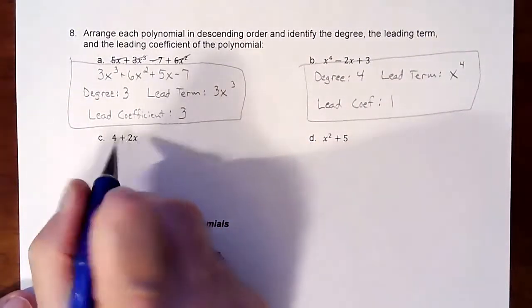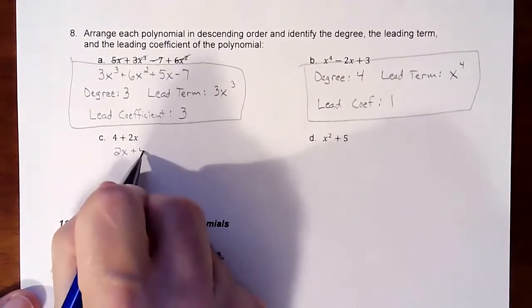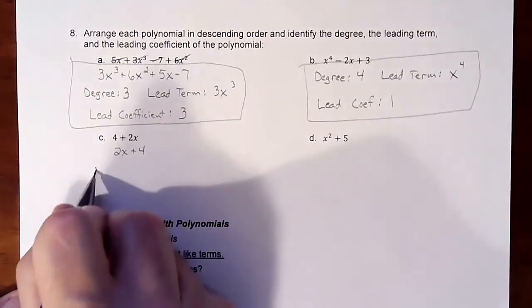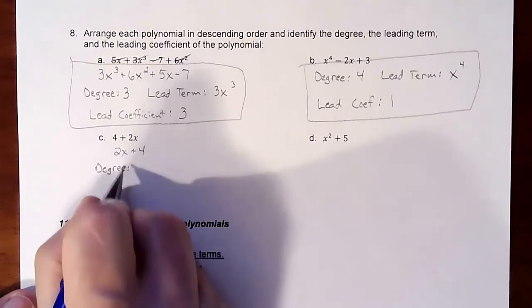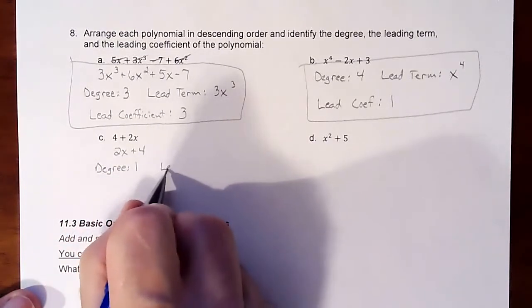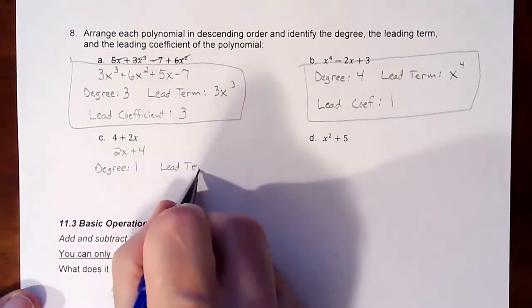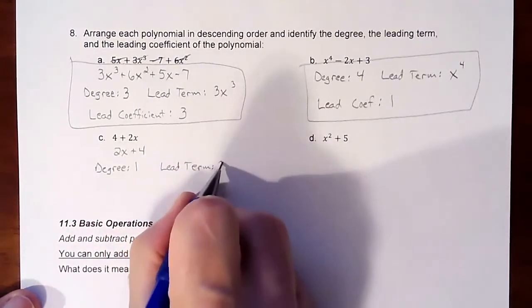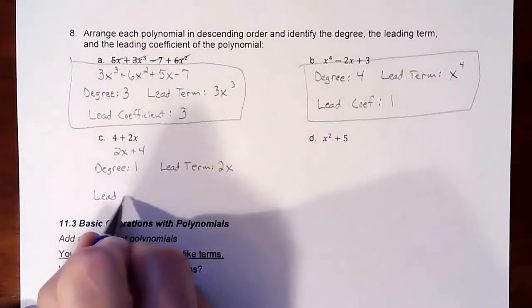All right, this one, not quite in order. Let's throw the 2x in front. So we have 2x plus 4. Our degree, and this would be a one. Our leading term would be the 2x, and then the leading coefficient is that 2.